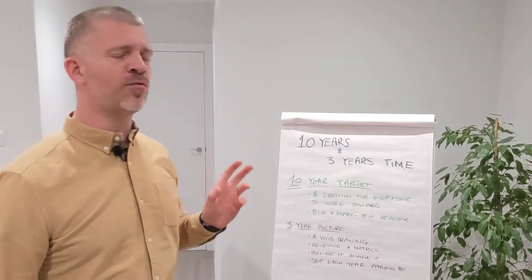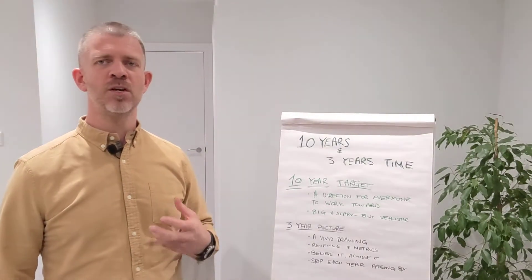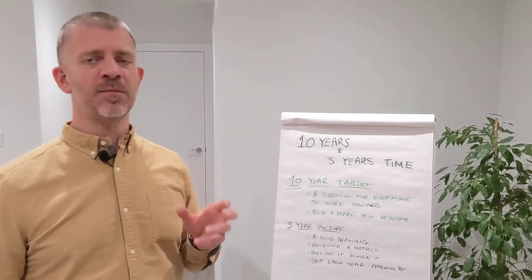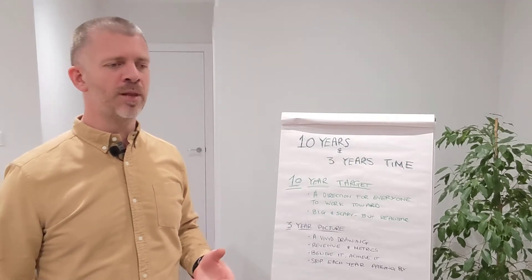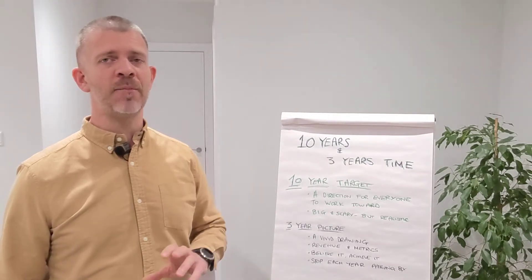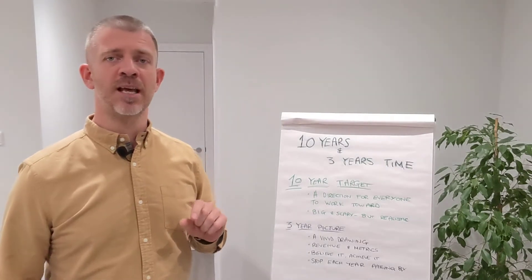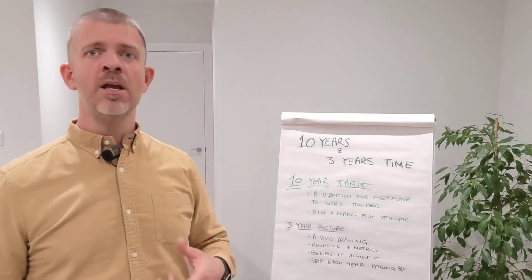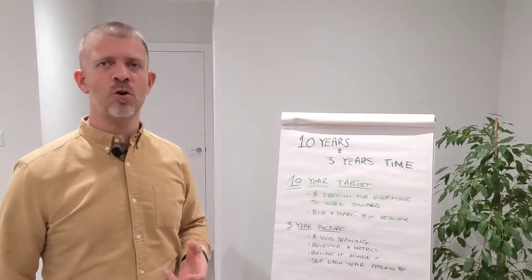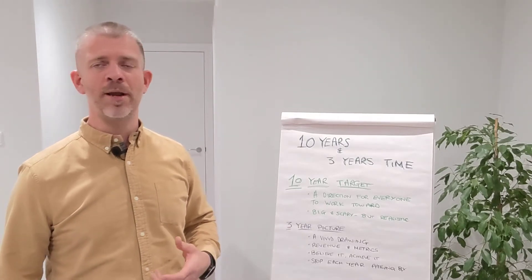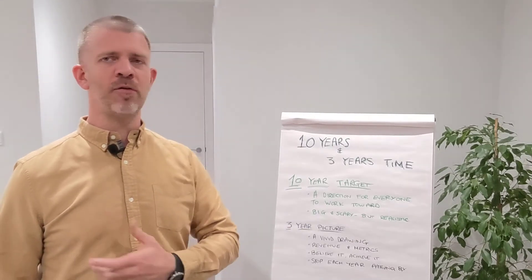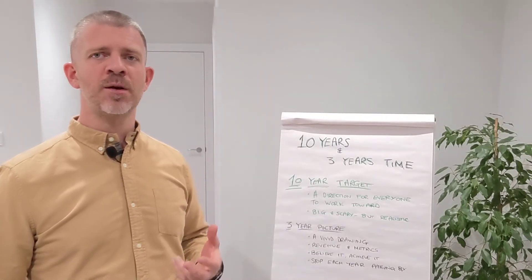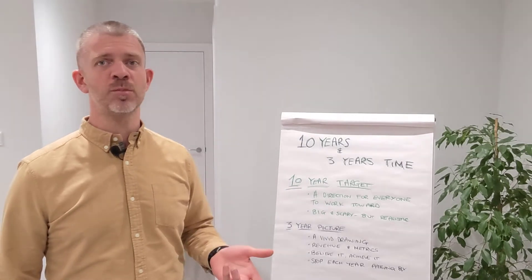Moving on to the three-year picture — it's called a picture for a reason. The idea is you should be able to draw out in the mind's eye something that the business needs to look like. It could be that the systems you've got at the moment are clunky, outdated, and need to be replaced — something bigger than a one-year target. It could be that the building you're working in is a bit small, cramped, and needs a full overhaul and refurbishment. Those sorts of things are big and can't really be done in a year or shorter.